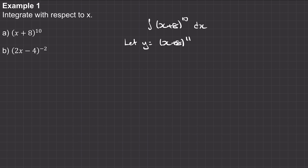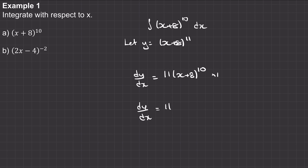I could have chosen any letter; I've chosen y because it's convenient. The next thing we're going to do is differentiate this. So dy/dx, using the chain rule, will be 11 lots of (x + 8) to the power of 10 — we multiply by 11 and take away 1 from the power. Then we multiply by the derivative of the inner function; the derivative of (x + 8) is 1, so dy/dx equals 11 lots of (x + 8) to the power of 10.